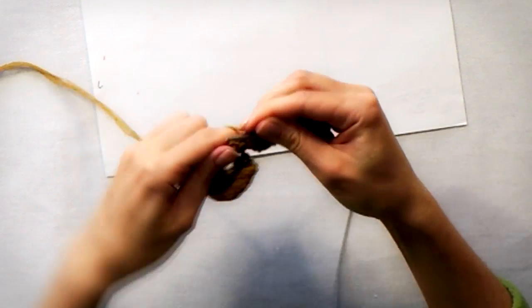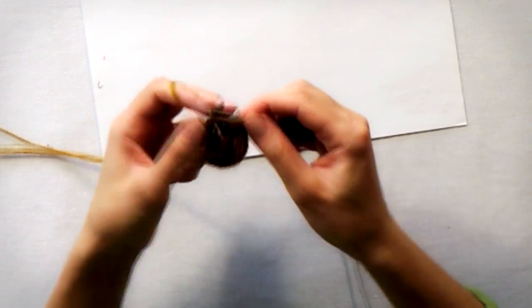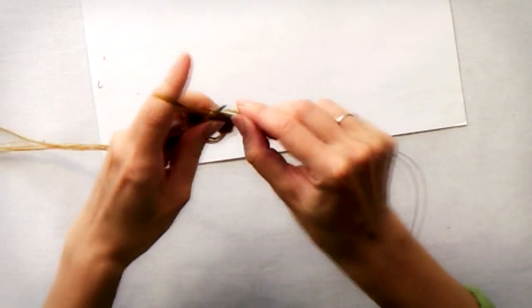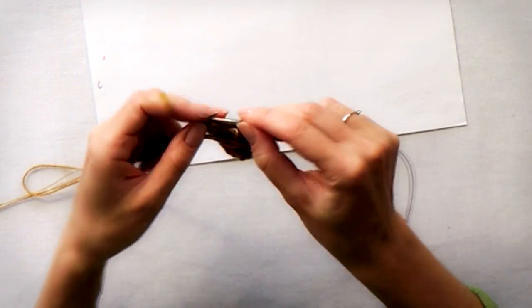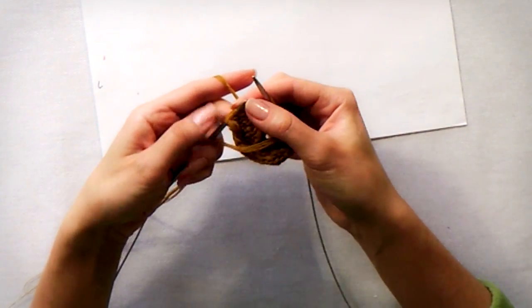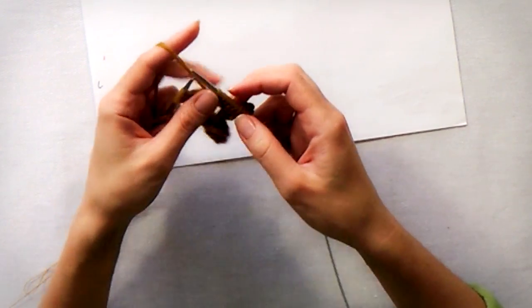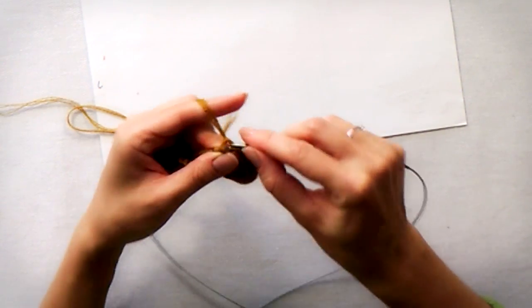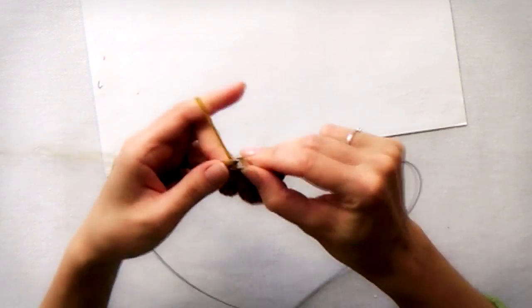Turn the work and purl 6 stitches. 3 stitches will be left on the right needle. Turn the work and continue knitting again like this until you have 12 rows.